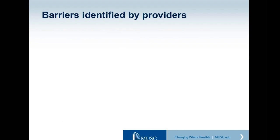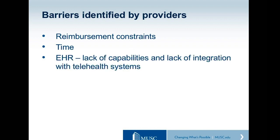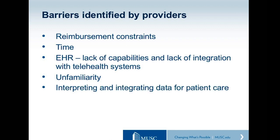Barriers identified by providers include reimbursement constraints — a significant concern when adding extra data to review and extra work — as well as time, since a busy clinic schedule makes it difficult to review information and then call patients and send in new prescriptions. Other barriers include integration of the electronic health record with outlying service providers, unfamiliarity with the technology, and challenges in interpreting and integrating the data. For example, if blood pressure is elevated one day but low the next, what do you do with that information? Equipment availability for patients is also a concern.